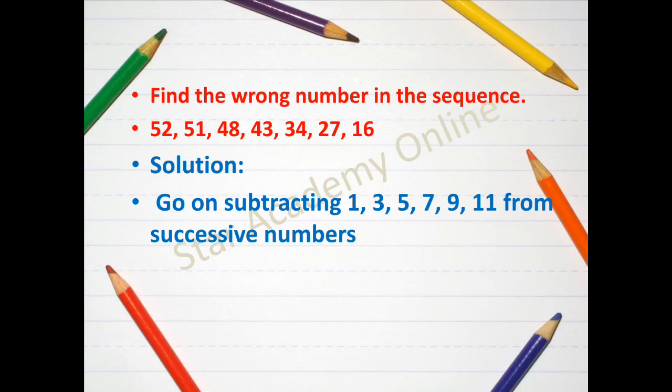But how do you get this pattern? Just try 52 minus 51 the answer is 1. Then 51 minus 48 is equal to 3. Then 48 minus 43 is definitely equal to 5. So when you get 1, 3, 5 you understand that there is a series or pattern of odd numbers.